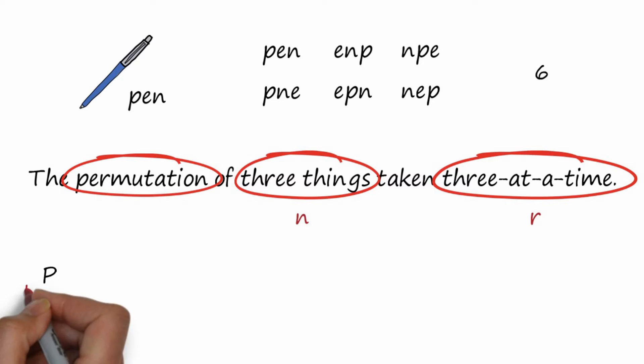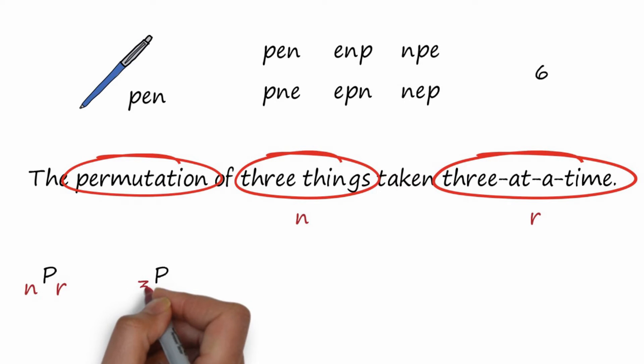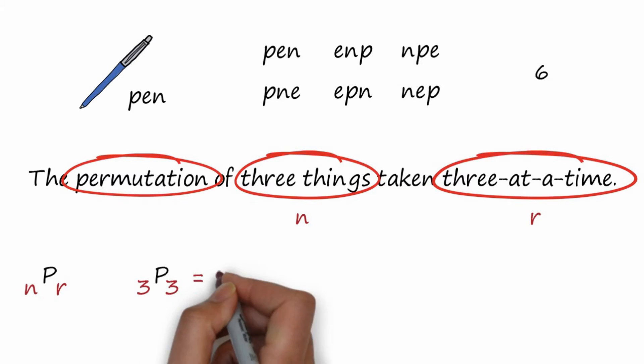Then we write it as a subscripted N, big P, and then a subscripted R. In this case, we have a subscripted 3, three things taken three at a time, subscripted 3 again. It equals six from our example.